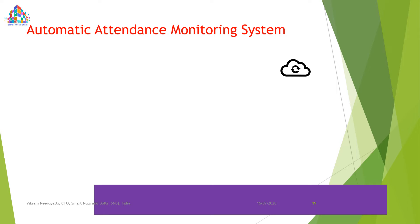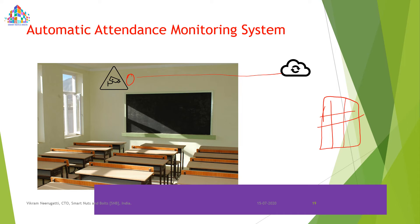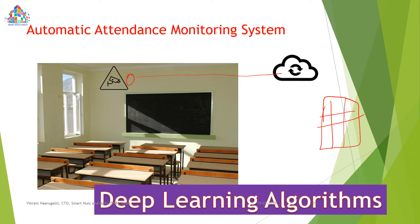Nowadays, instead of taking attendance manually, if a camera is fixed in a classroom it will take snapshots every 5 to 10 seconds. Those snapshots go to the cloud, where they are mapped against pictures of students already stored. Based on the mapping, an attendance sheet is produced showing how many hours each student was present. This works for both students and faculty, and is implemented using deep learning algorithms.